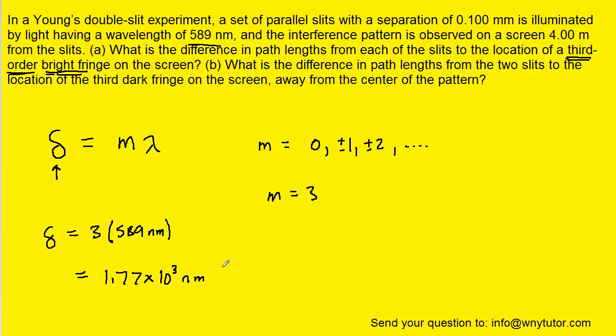If you needed to express that in micrometers, we note that 10 to the positive 9 nanometers are present in 1 meter, and then of course 1 meter is 10 to the positive 6 micrometers. If you set up the calculation that way, the nanometers will cancel and the meters will cancel, leaving you with micrometers. And so you end up with 1.77 micrometers. So that would be the correct answer to part A.